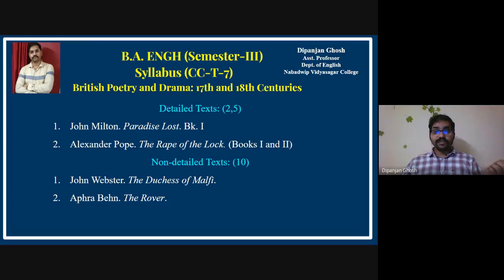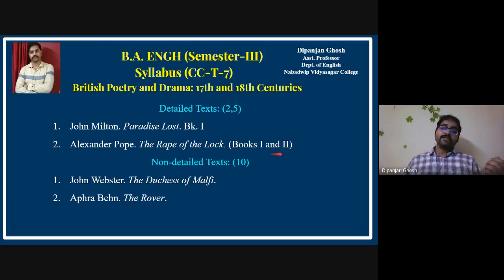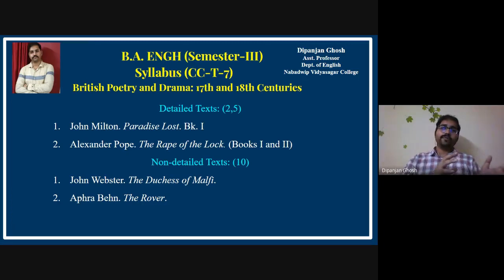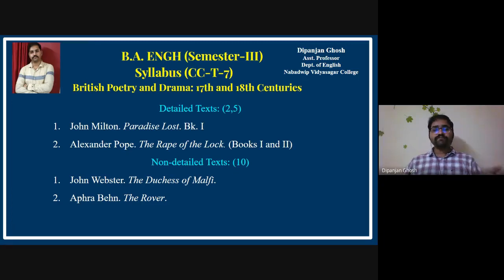If you go through the history of English literature, you will find these texts represent different sections of that history. That is why you have one text each by John Milton, Aphra Behn, John Webster, and Alexander Pope — each representing a particular period of literary history.